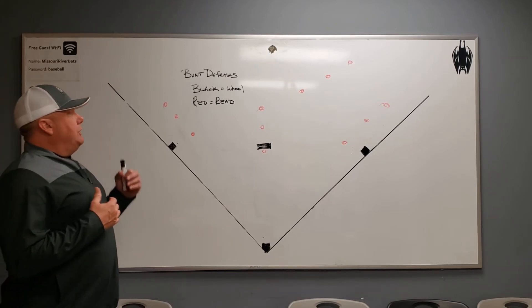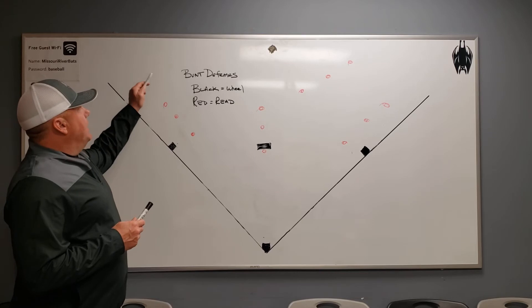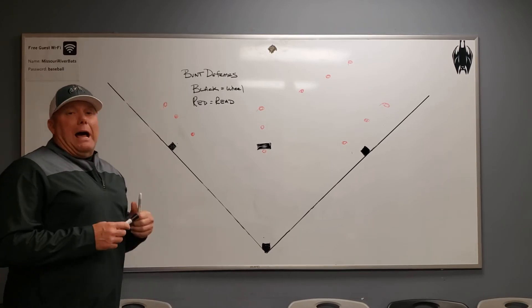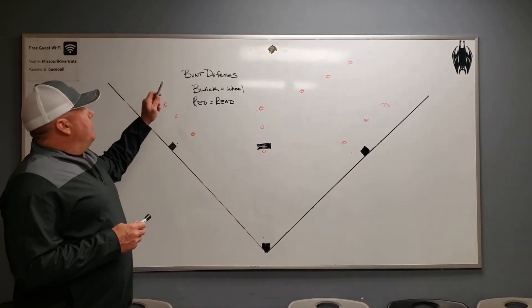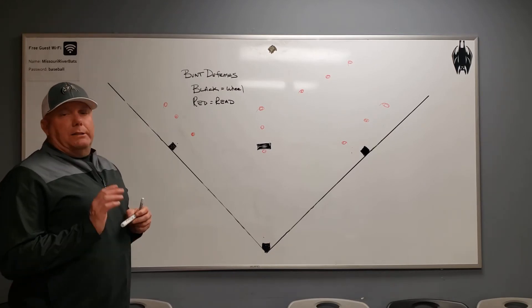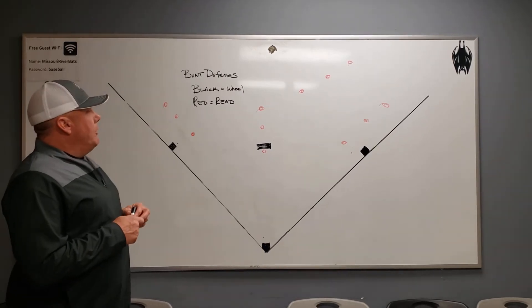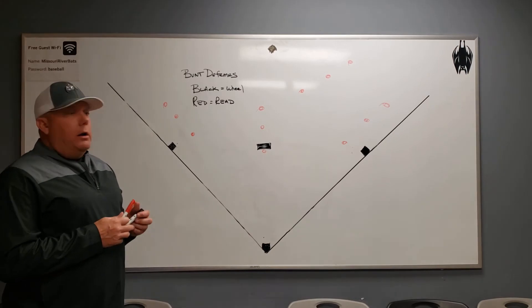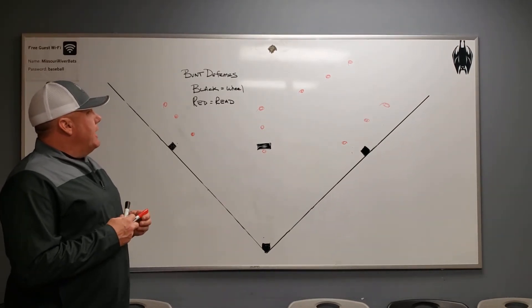So I teach, and as a club, we have two bunt defenses. We have what we refer to as black or red. Black is wheel. Red is read. It's just easier to remember it that way. I'm going to walk you through what each one of them are, and then you can certainly discuss that.